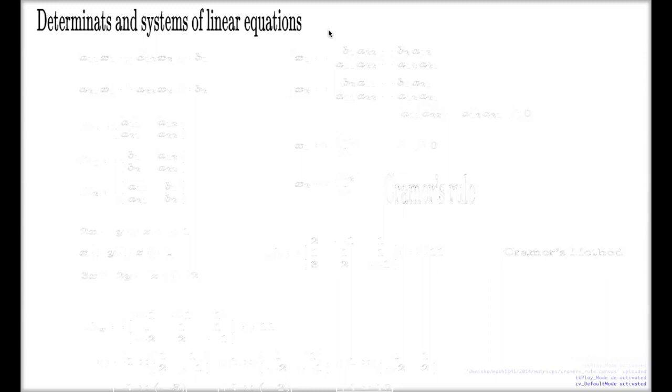Imagine you have a system of two unknowns, two equations with two unknowns. General system. We know such a system will be looking like this. First equation, second equation.